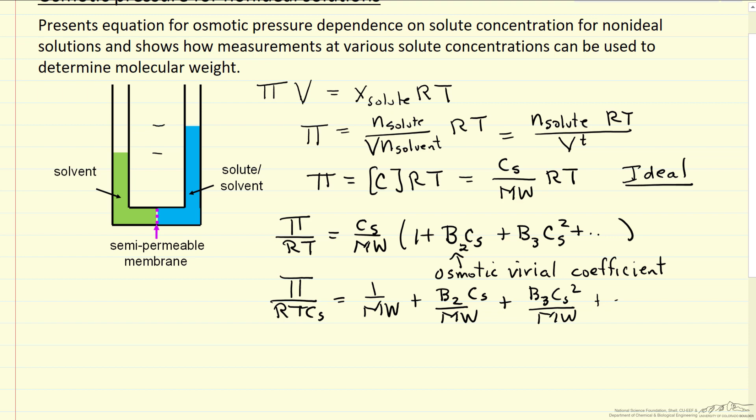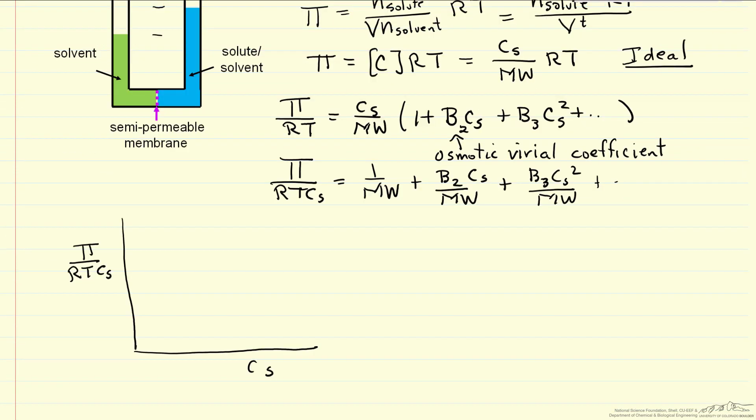And so what we want to do then, if we make measurements at a number of concentrations, we should be able to plot this. Well if this were ideal, then we should expect a horizontal line, where this value, of course, here's the intercept of the equation, general equation, that's one over the molecular weight.